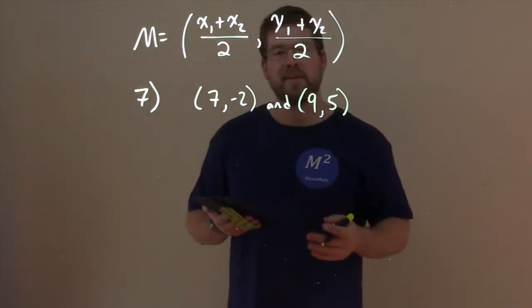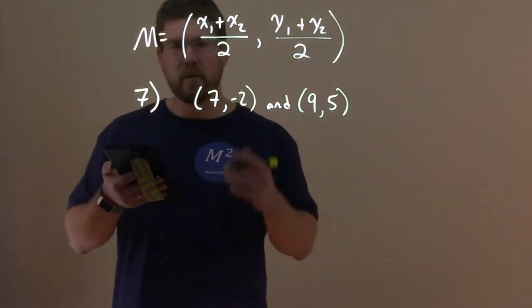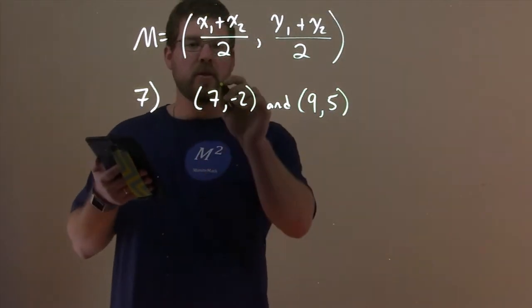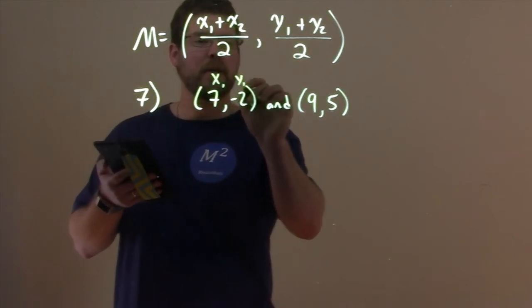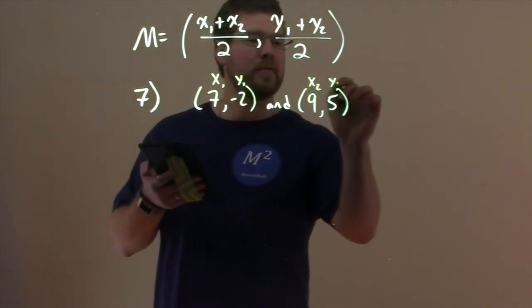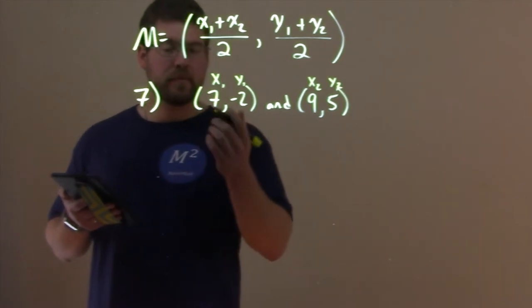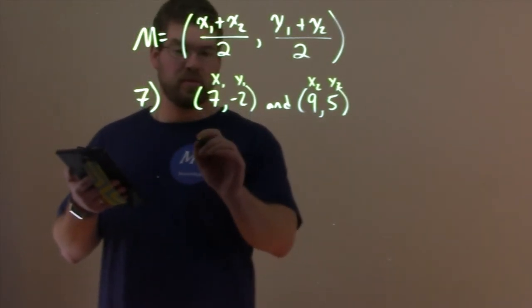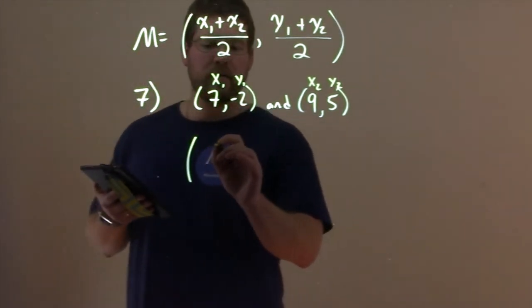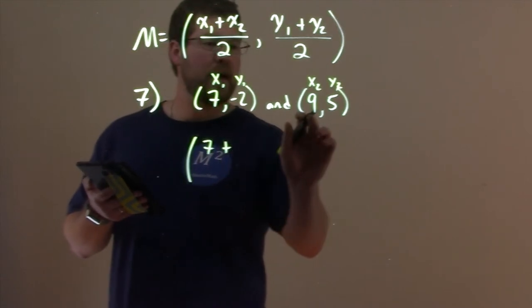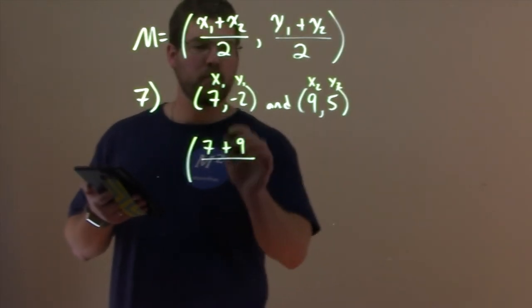We want to use the midpoint formula to find the midpoint, so let's use our formula. Let's call this one x1, y1 here, and x2, y2. It's always good to label that. Now we just use our formula. For the x values, we have 7 plus x2, which is 9, over 2.